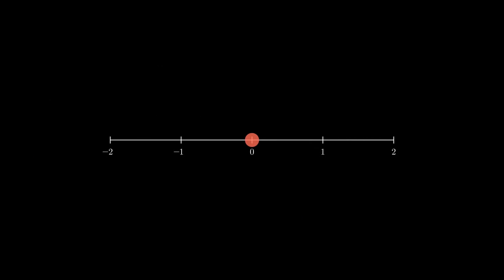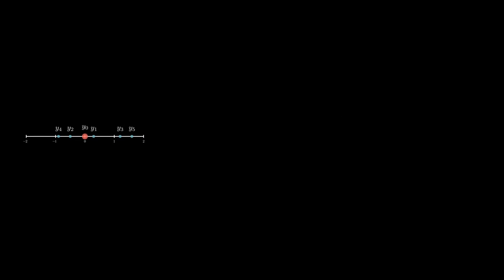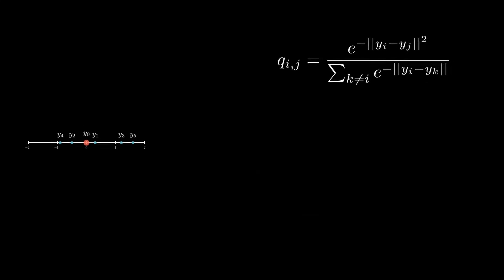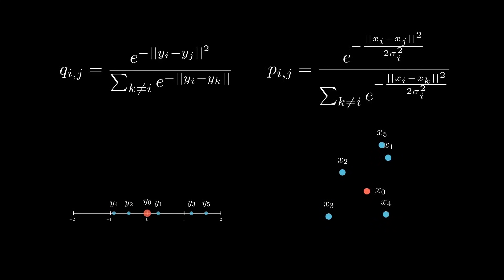In our low-dimensional space, we start by placing points randomly. Then we repeat the same process we just did with our high-dimensional data. We calculate the same kind of probabilities based on the distances between these points. As you can see, it is exactly the same formula, except we use different variables since we describe the low-dimensional representation. Now that we have two different probability distributions representing our high-dimensional and low-dimensional spaces, let's see how we bring each of these distributions closer together.